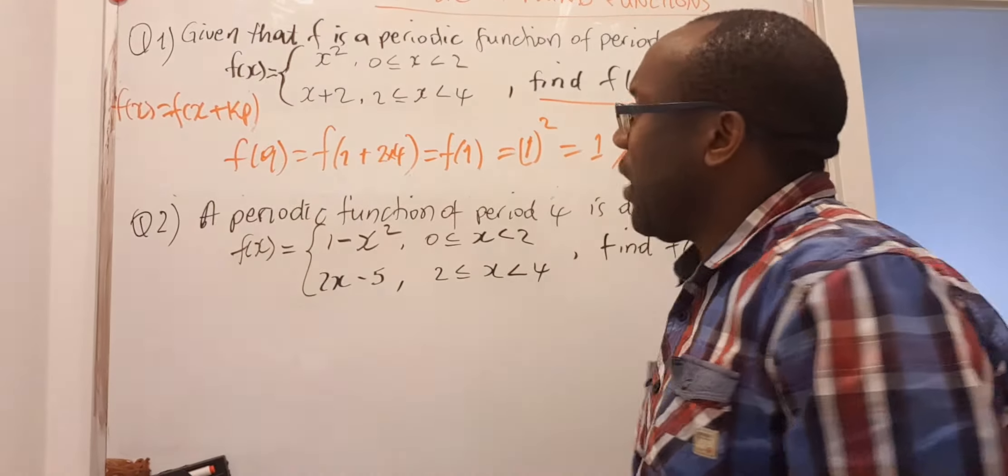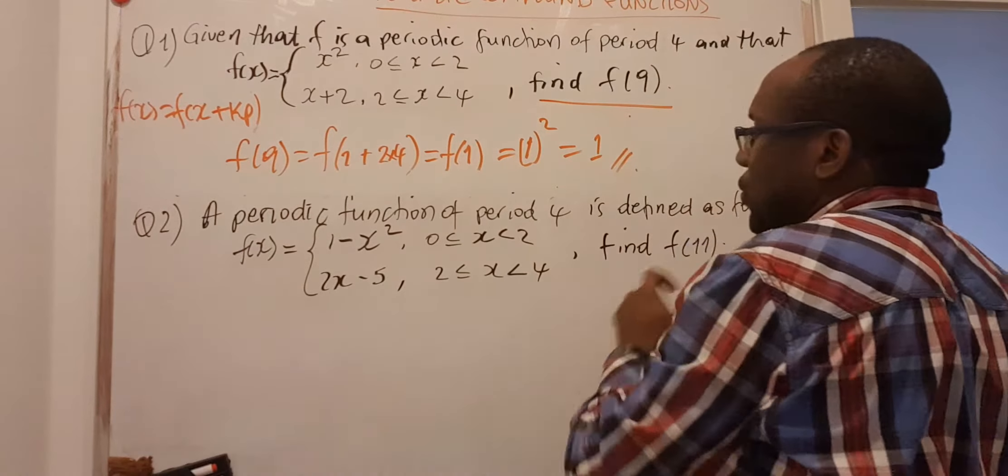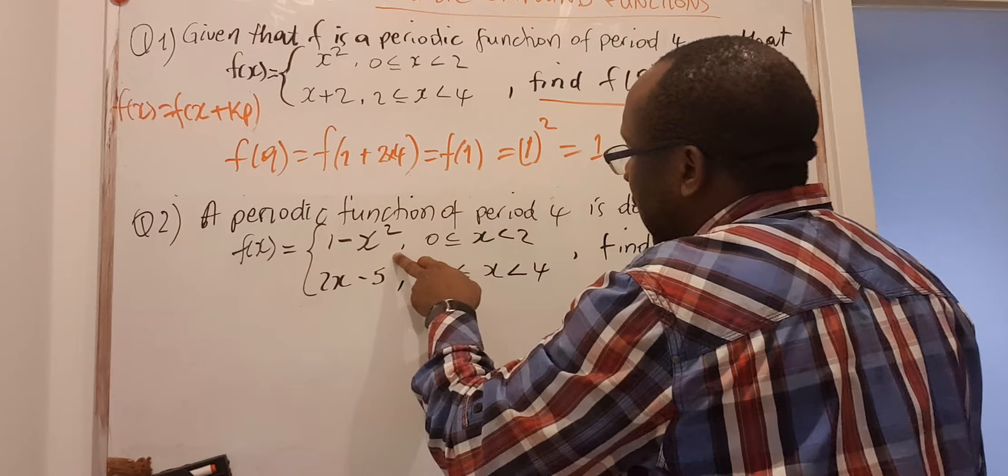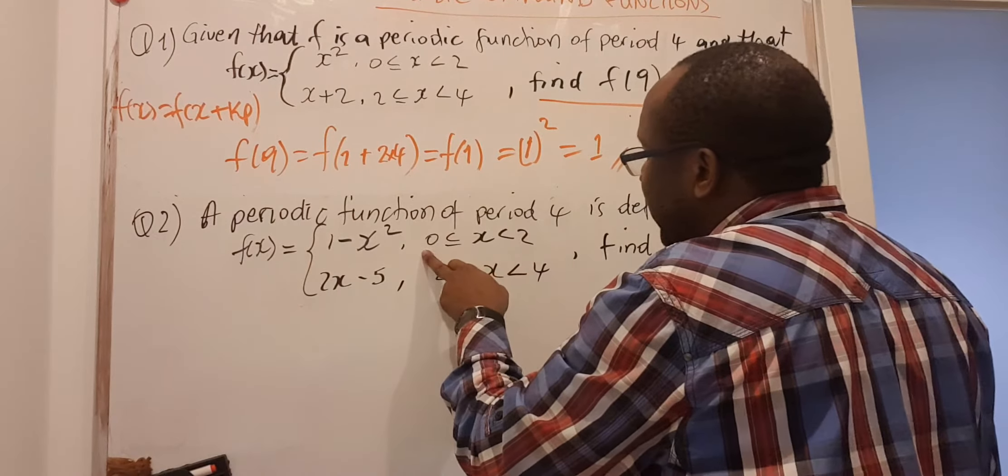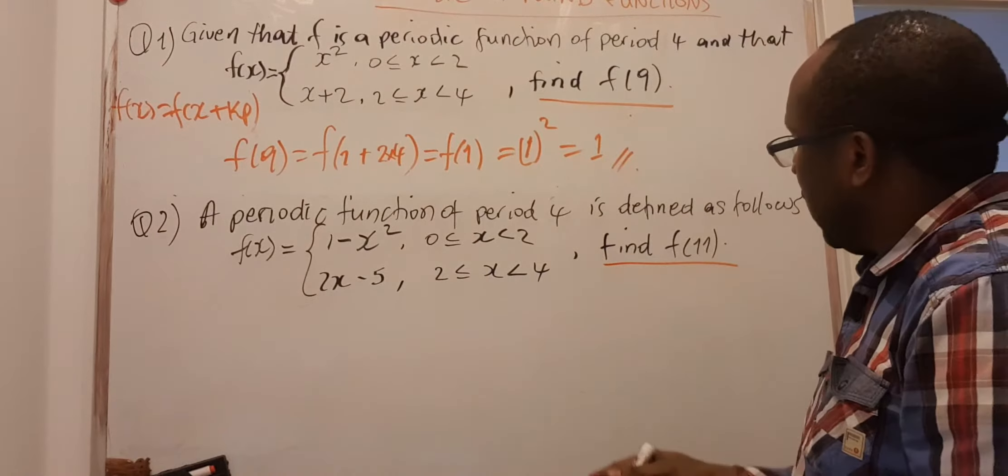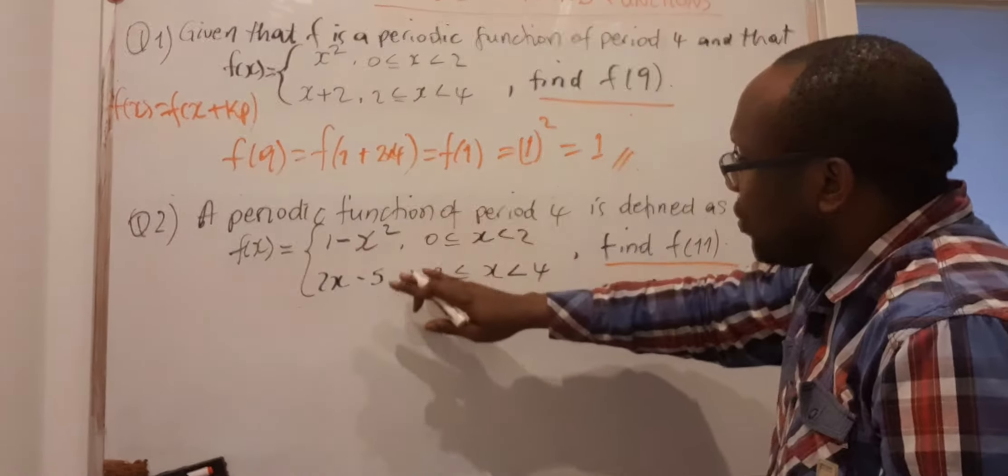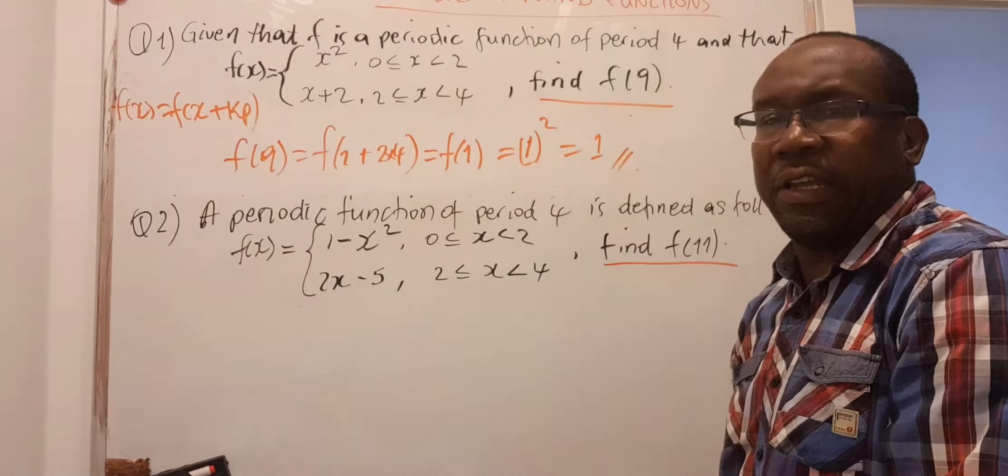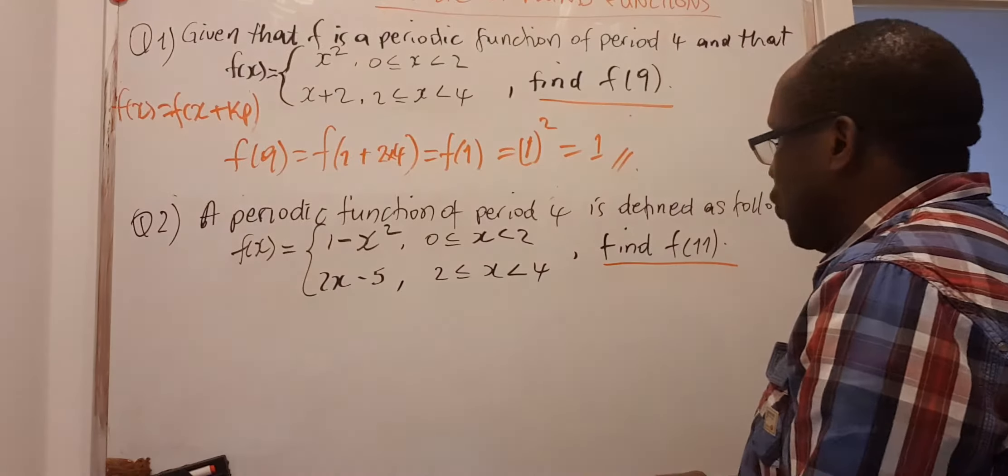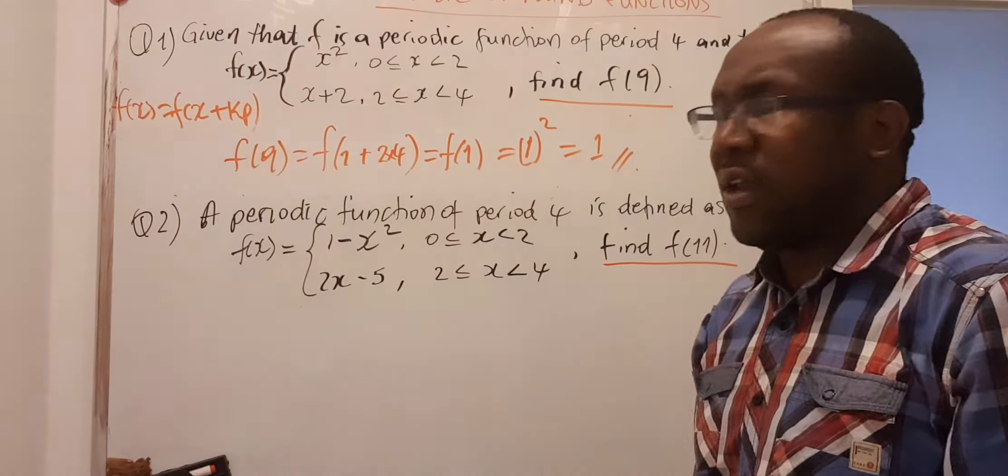We look at the second one. A periodic function of period 4 is defined as follows: f of x is equal to 1 minus x squared if x is greater than or equal to 0, less than 2; 2x minus 5 if x is greater than or equal to 2, less than 4. We ask now to look for f of 11. Typical ideas, you always see that it has to look for a value that is not defined the way you are given in the particular compound function. So you have to use the idea of a periodic function to get a number that falls in that area.